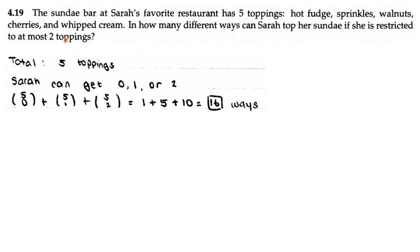AoPS Counting and Probability 4.19. The sundae bar at Sarah's favorite restaurant has five toppings: hot fudge, sprinkles, walnuts, cherries, and whipped cream. In how many different ways can Sarah top her sundae if she is restricted to at most two toppings?